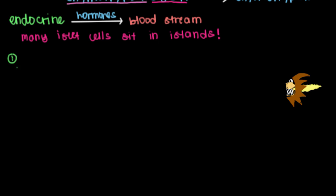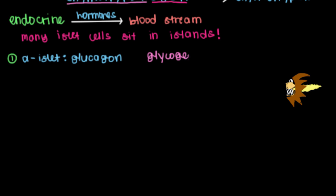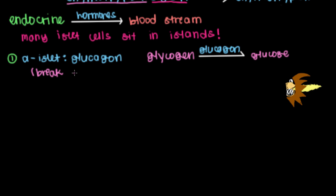First, we have alpha islet cells, and these release a hormone called glucagon. The main function of glucagon is to take things like glycogen — a whole bunch of glucose molecules stacked on top of each other — and break them down into smaller glucose monomers or molecules. So we're making glucose from glycogen whenever we release glucagon. Glucagon is responsible for the breakdown of a whole bunch of macromolecules.